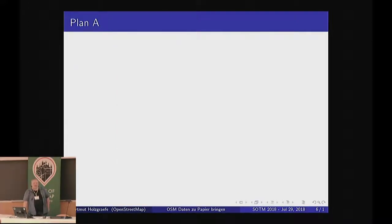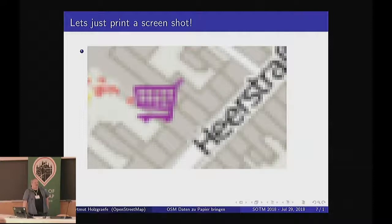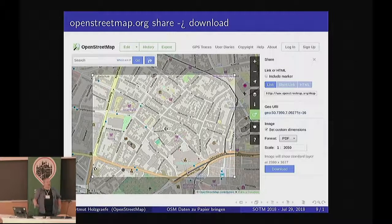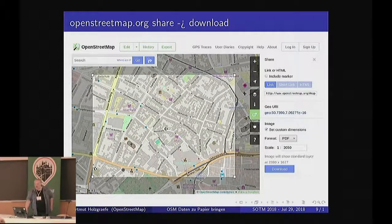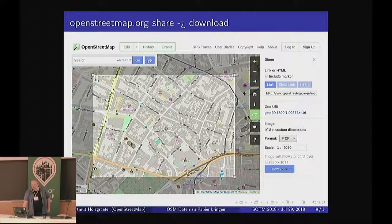So how do you get a map printed? First, plan A: let's just do a screenshot. Obviously it doesn't work for large resolutions for print, so we immediately stepped to plan B — using the export feature on the OpenStreetMap website. You can select a map area and export it as PDF, SVG, or bitmap to edit further. But that still had issues: you only have the standard OpenStreetMap style, not even the three other styles on the website, and it's hard to get the right aspect ratio and scale factor for a good print.